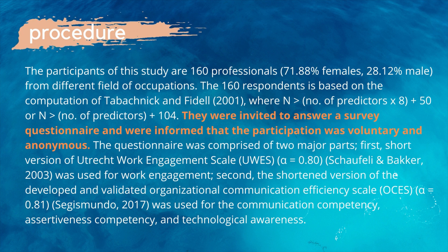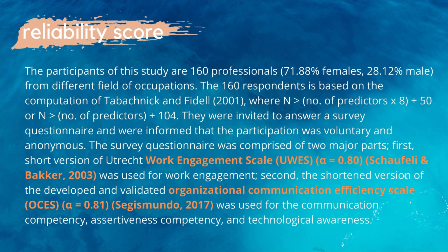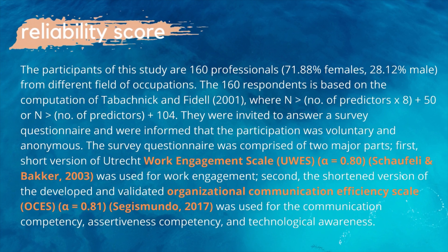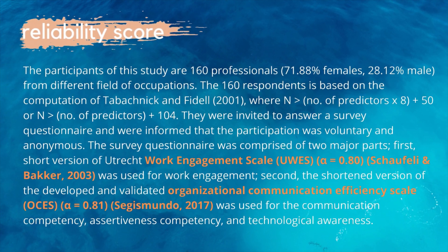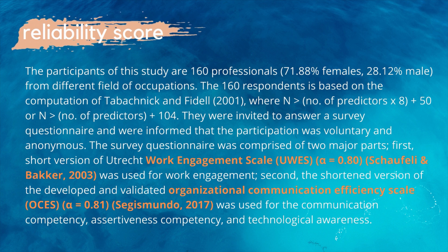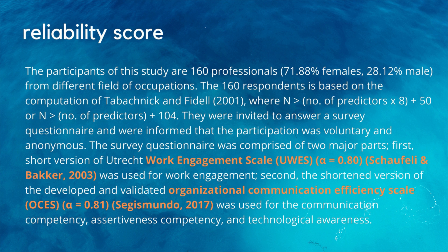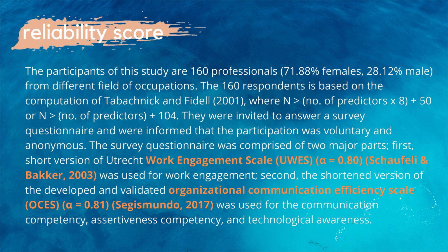For example, participants were invited to answer a survey questionnaire and were informed that participation was voluntary and anonymous. The next step is to prove that the survey used in the study is reliable. For example, the survey questionnaire was comprised of two major parts. First, the short version of the Utrecht Work Engagement Scale was used for engagement. Second, the shortened version of the developed and validated Organizational Communication Efficiency Scale was used for communication competency, assertiveness competency, and technological awareness.